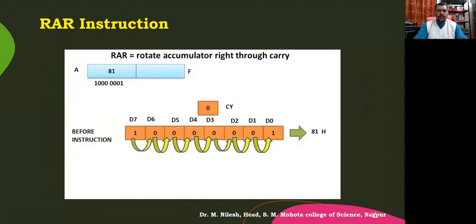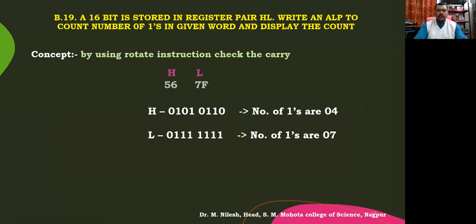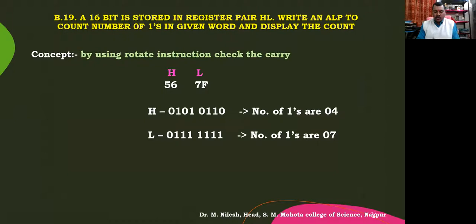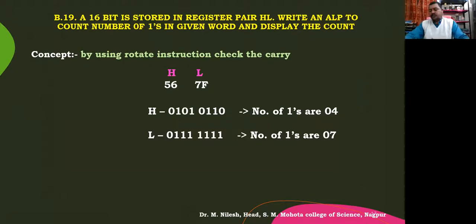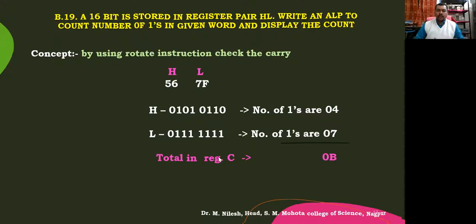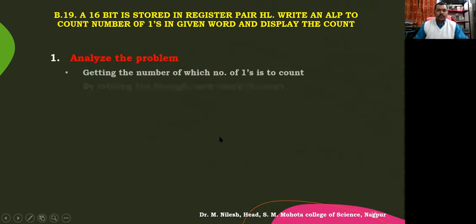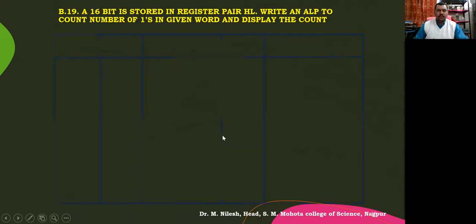These are some of the instructions that we used. This was actually the program. Due to a little bit of instruction fault, we were not able to execute it. But I have dropped that program in our group and said that it is working now. This was the main program to calculate the number of ones — the count was 0B, to be stored in register B.